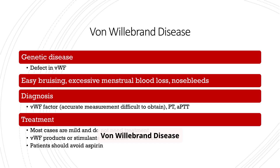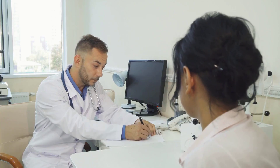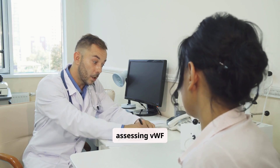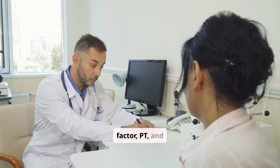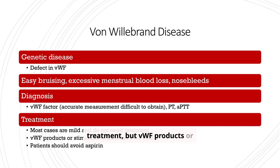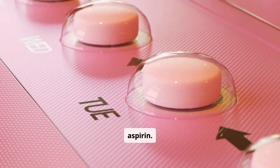Von Willebrand disease (VWD) is a genetic disease with a defect in VWF. Symptoms include easy bruising, excessive menstrual blood loss, and nosebleeds. Diagnosis involves assessing VWF factor, PT, and APTT. Most cases are mild and do not need treatment, but VWF products or stimulants to increase VWF levels can be used. Patients should avoid aspirin.